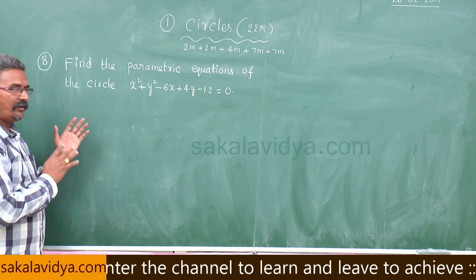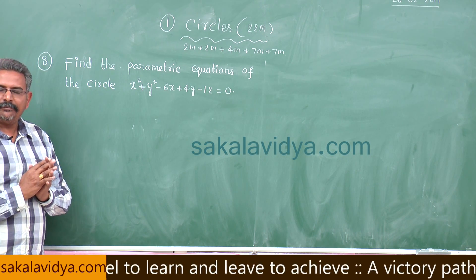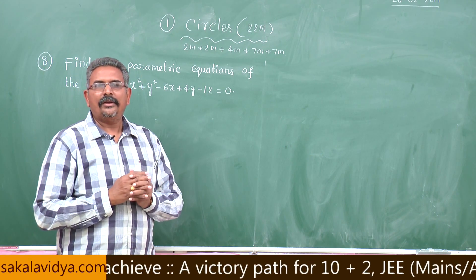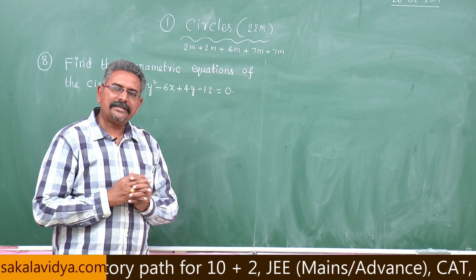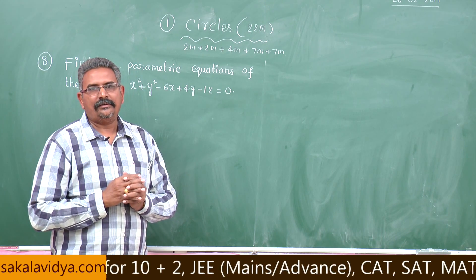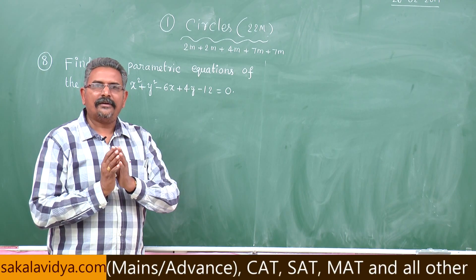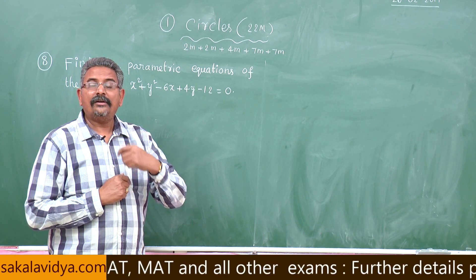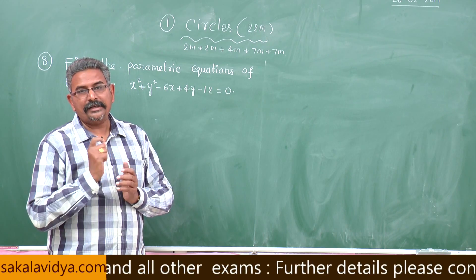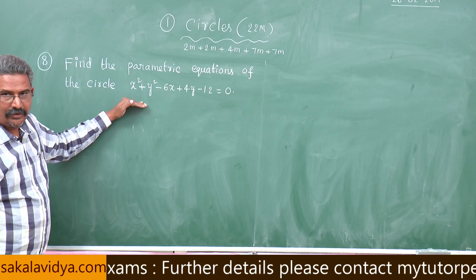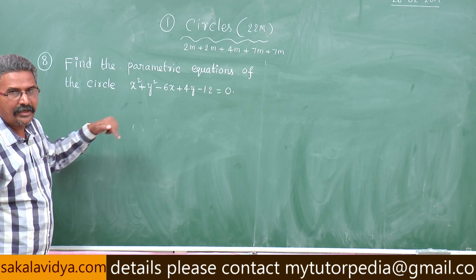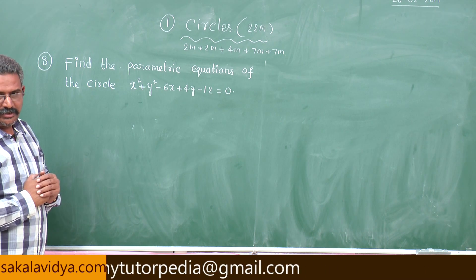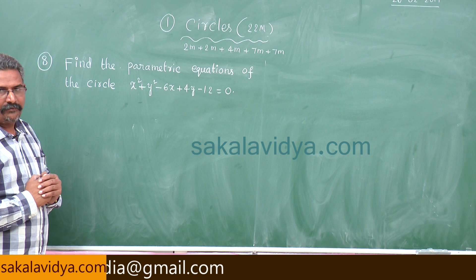When the circle is in the general form, the parametric equations are given by x equals minus g plus r cosθ, and y equals minus f plus r sinθ. Here, (minus g, minus f) is the centre of the circle and r is the radius. So we need to find the values of g, f, and radius r.